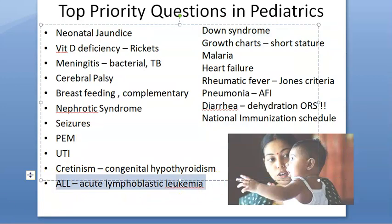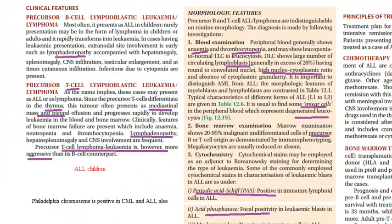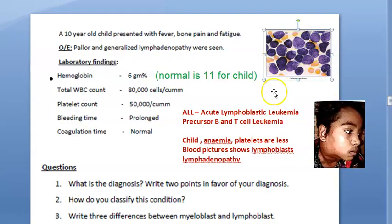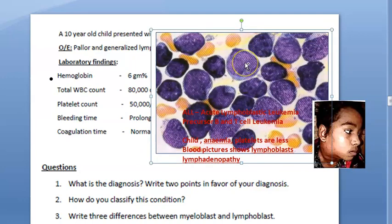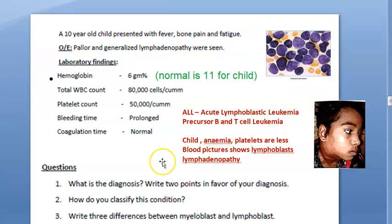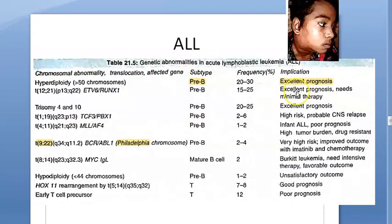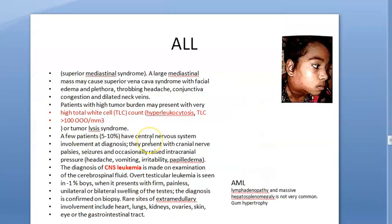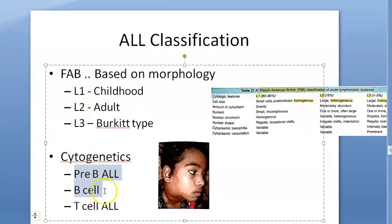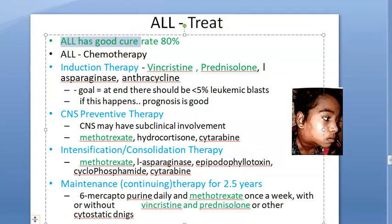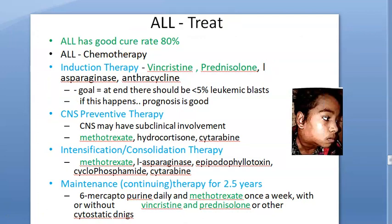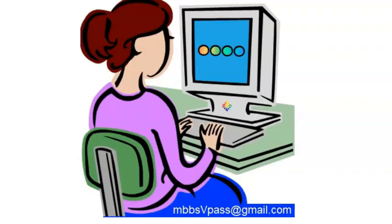Acute lymphoblastic leukemia (ALL) is the most common childhood malignancy. There are B-cell type, T-cell type, etc.; the Philadelphia chromosome can be positive. The child will present with bone pain, generalized lymphadenopathy, and fever. You can have pre-B cell, B cell, T cell, childhood type, adult type, and Burkitt type. Fortunately it has a good cure rate. Therapy includes vincristine and methotrexate as standard drugs.